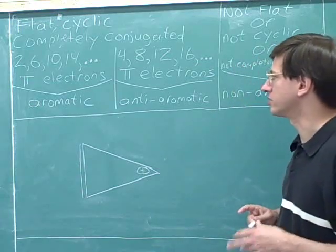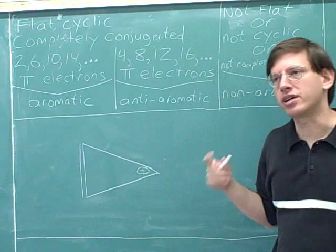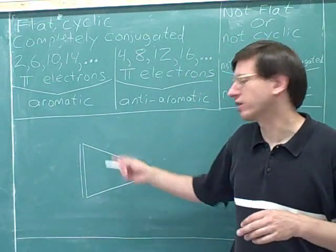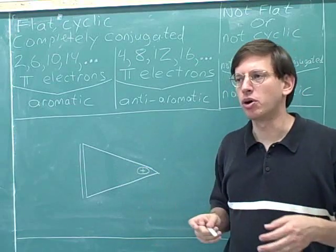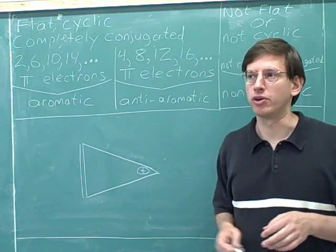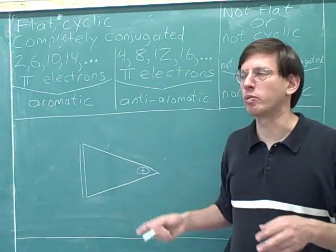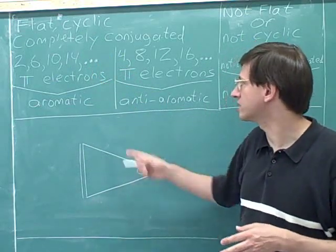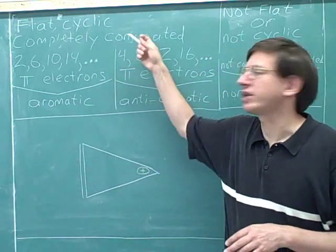What category does this molecule fall into? Is it flat? Remember that in many cases you can't really tell whether a molecule is flat just by looking at the picture of it — you'd have to build a model. So on most organic chemistry exams, you're generally supposed to assume that the molecule is flat unless there's a good reason not to. So assuming this is flat, obviously the molecule is cyclic. Is it completely conjugated?